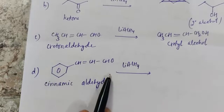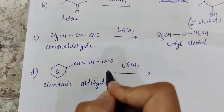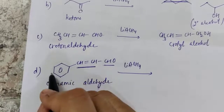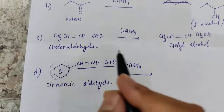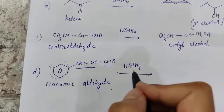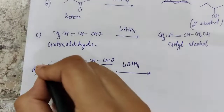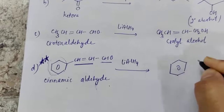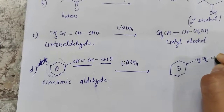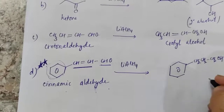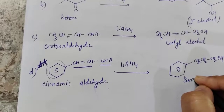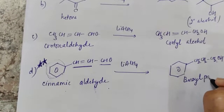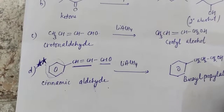Next is cinnamic aldehyde, which also has a conjugated double bond with the aldehyde group, further conjugated to the benzene ring. Cinnamic aldehyde shows a slightly different reaction with lithium aluminium hydride: in this case the double bond also gets reduced, and the product obtained is benzyl ethyl alcohol.